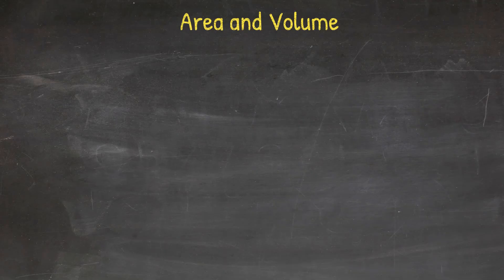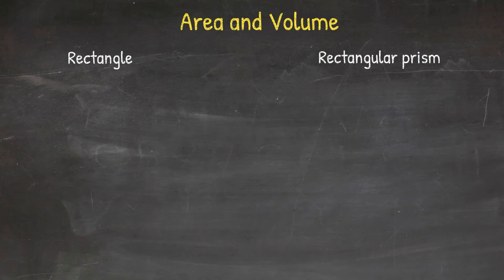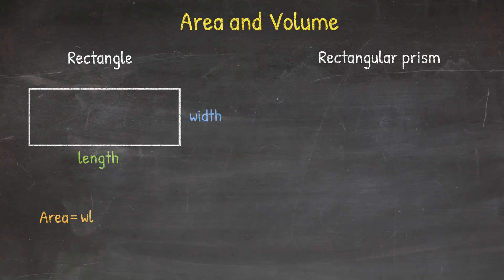Now we'll discuss rectangle and rectangular prism. The area of a rectangle equals width times length. For example, if our width is 5 inches and the length is 10 inches, then our area would be 5 times 10, or 50 square inches.